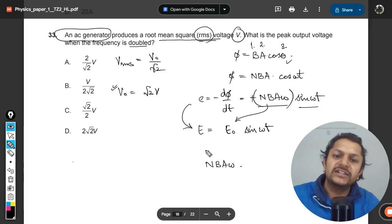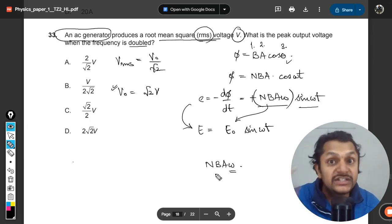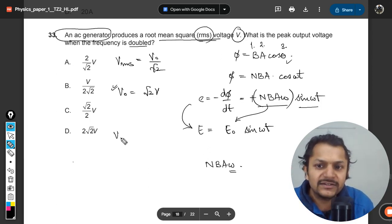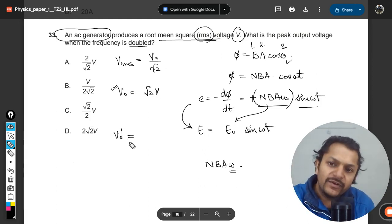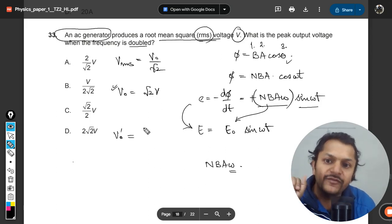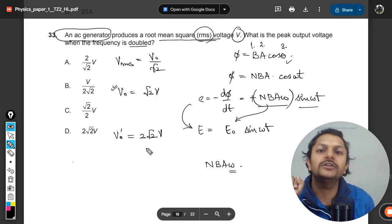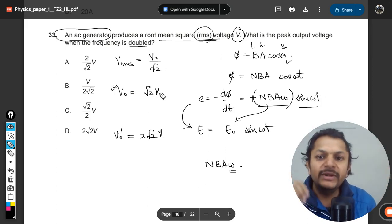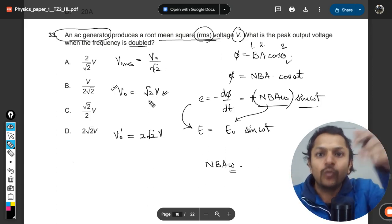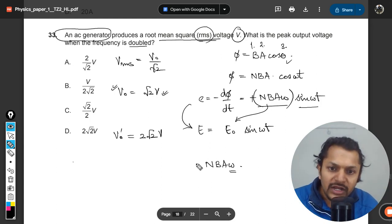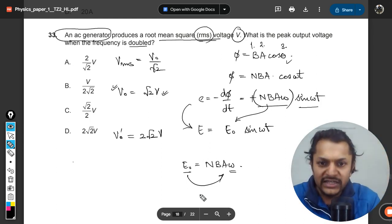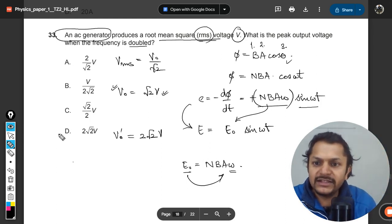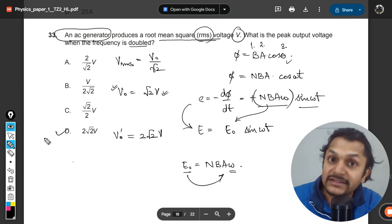But now ω is doubled. The frequency is doubled, which means that now the peak voltage is doubled. So in this case, the new V₀' will be equal to double of this, so it will be 2√2V. Clearly the peak value of the EMF is directly proportional to the frequency. So if the frequency is doubled, the peak value is doubled, and hence our answer for this question is D.